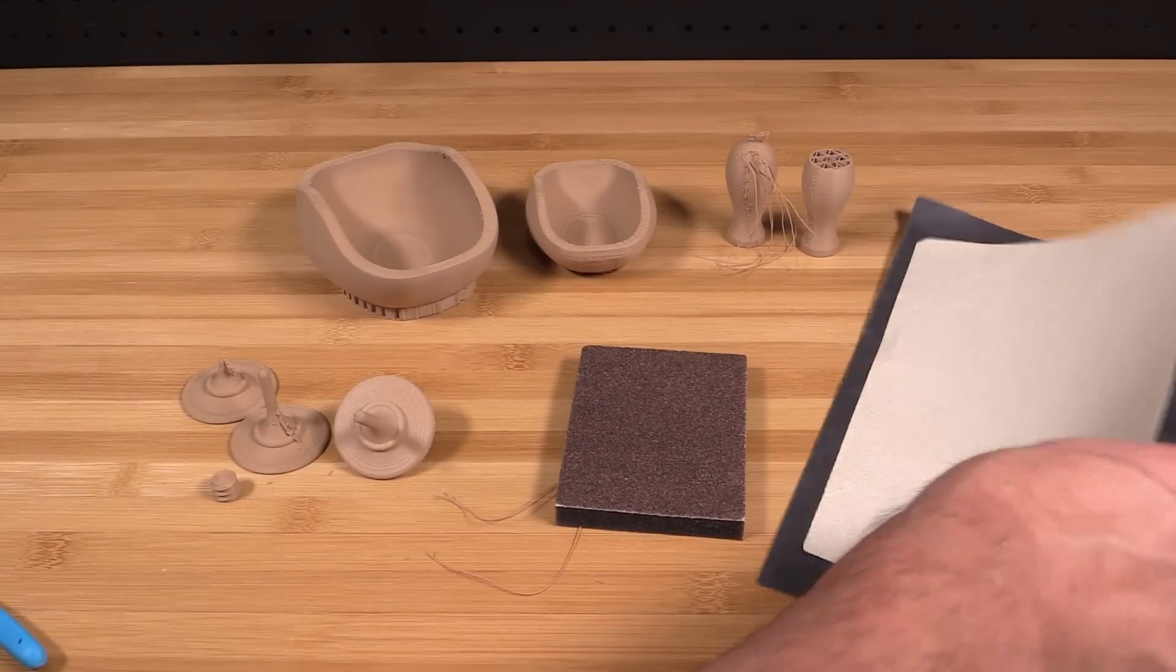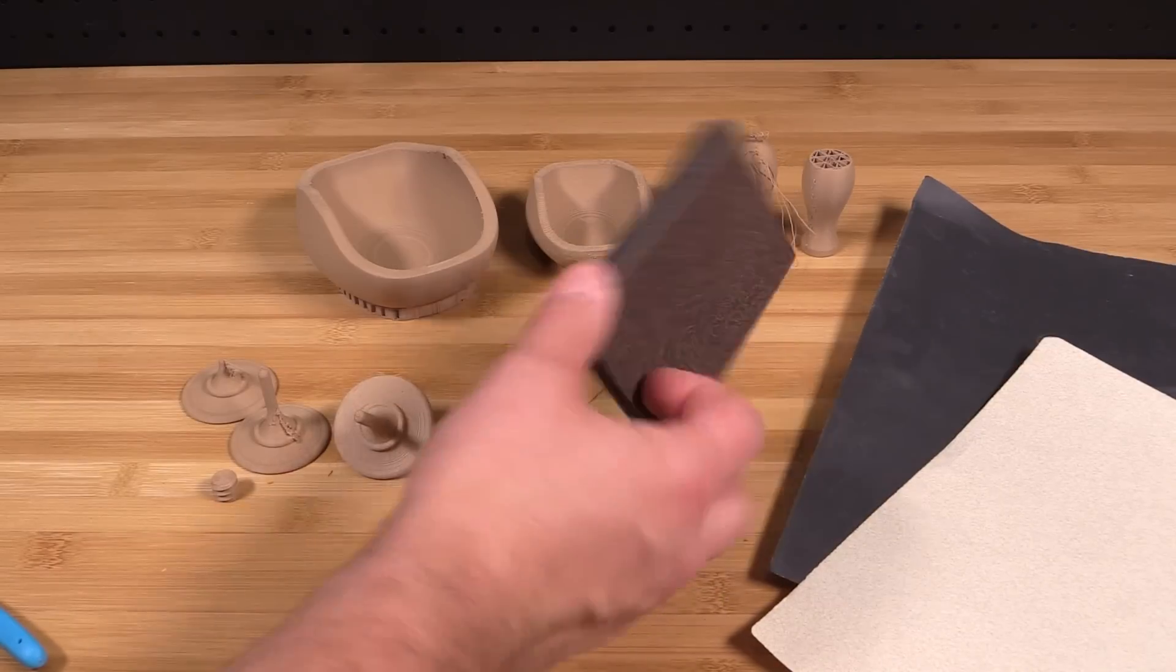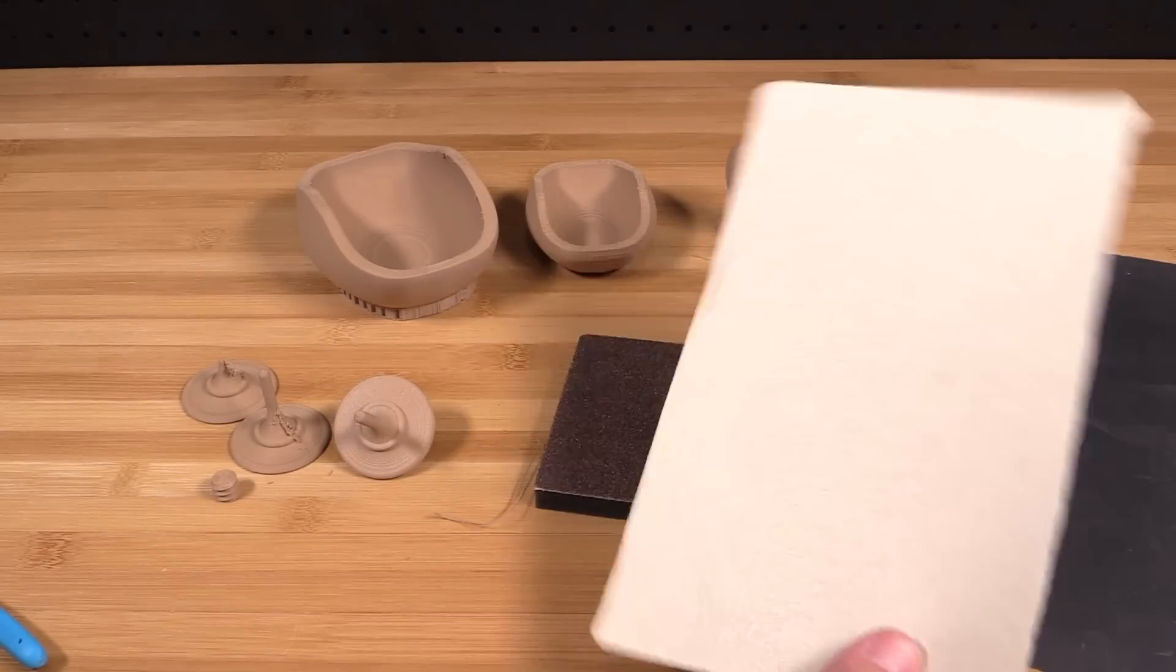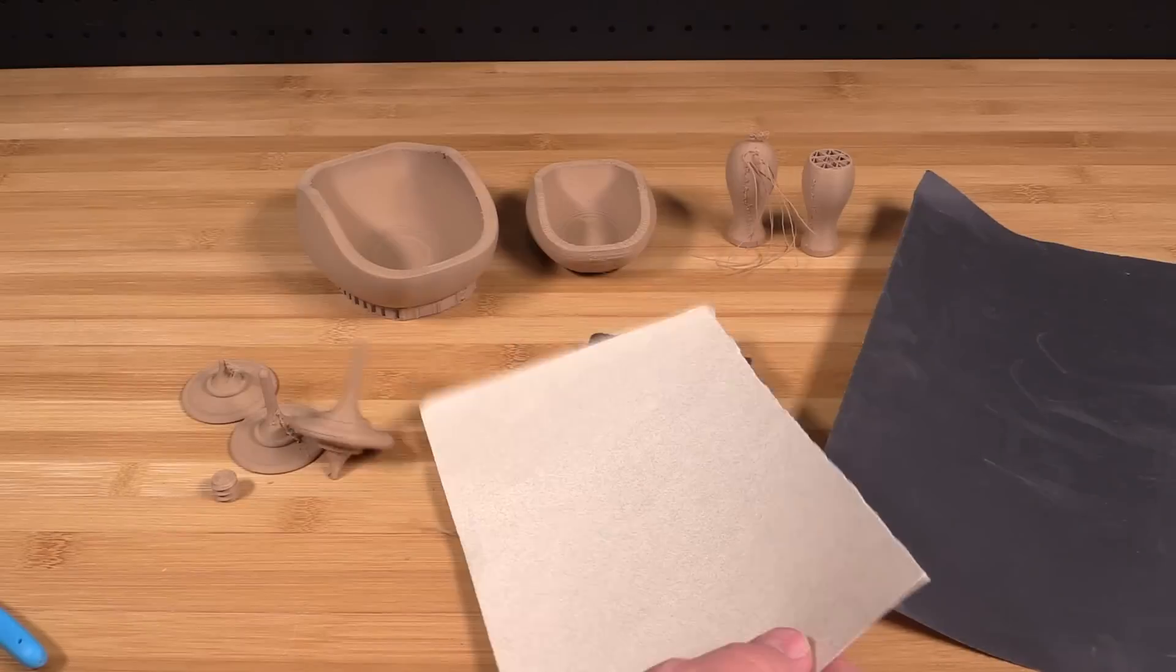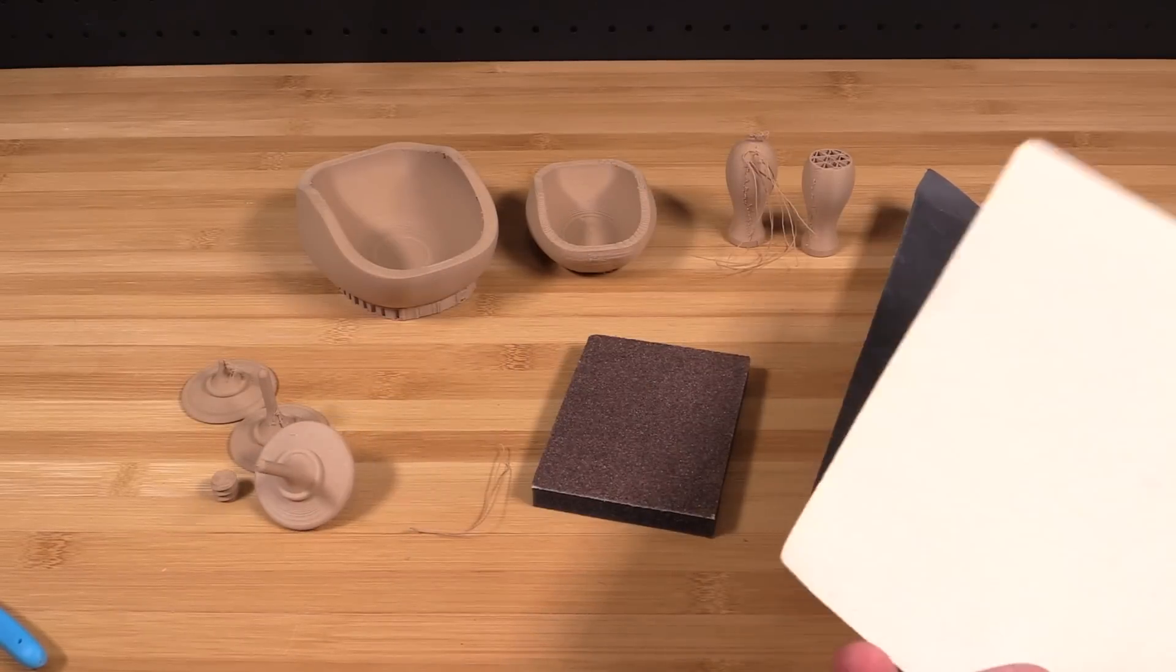Now just like real wood, this PLA wood can be sanded. So I'm going to go and I'm going to prep these for finishing by using an 80 grit, or starting with an 80 grit, then down to a 220, and then finishing it off with a 600.